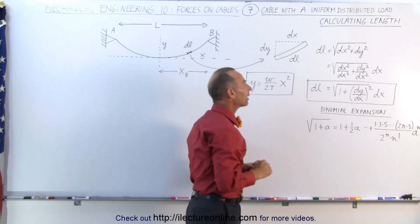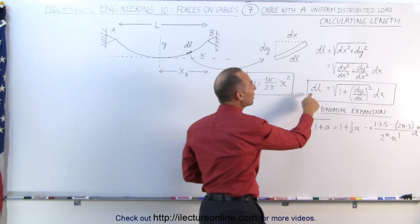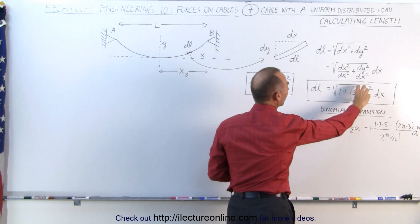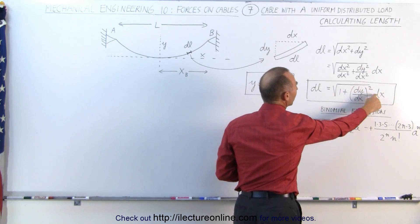we can then write it as DL is equal to the square root of 1 plus (DY/DX) quantity squared times DX.